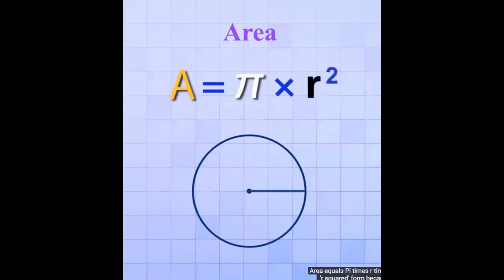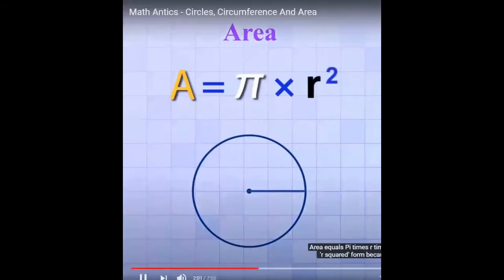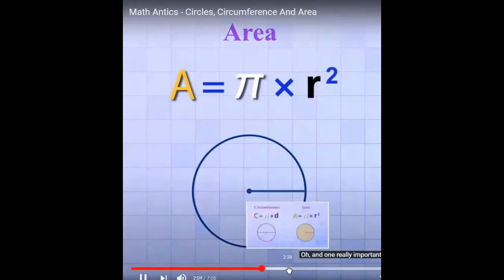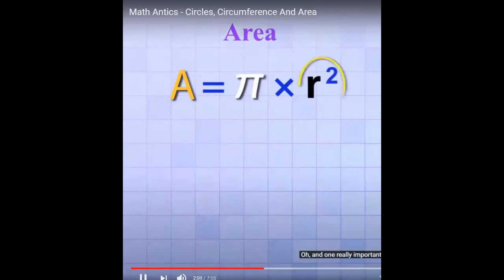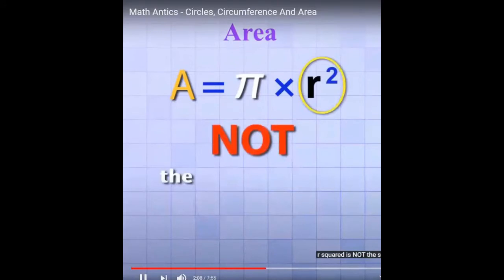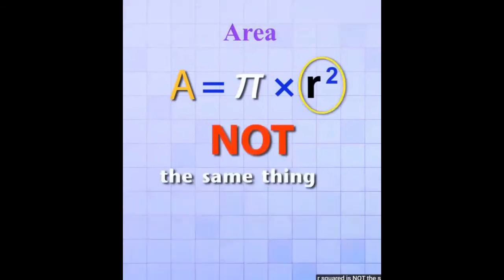So our formula is really just area equals pi times R times R, but we write it in the R squared form because it's more compact. One really important thing to keep in mind is that R squared is not the same thing as 2 times R — that's a common mistake students make when first learning how to find the area of a circle.